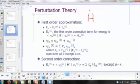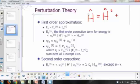Your Hamiltonian can be written as a sum of two parts, let's call that H naught plus H prime,